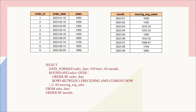The final query first formats the date as a month, then applies the AVG window function to calculate average sales over the current and previous two months using ROWS BETWEEN 2 PRECEDING AND CURRENT ROW. A ROUND function is applied to round to integers, and ORDER BY month ensures months are in ascending order. That gives us the three-month moving average.